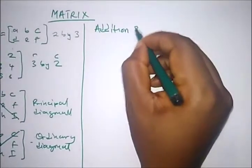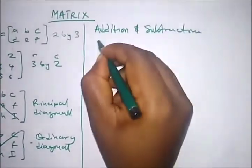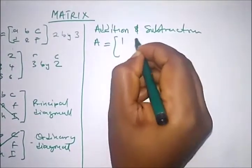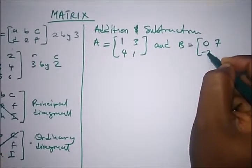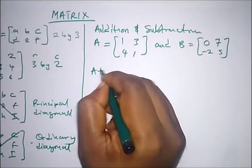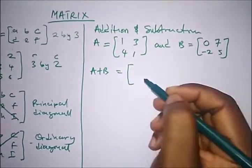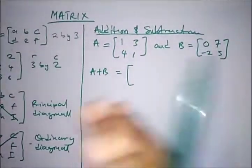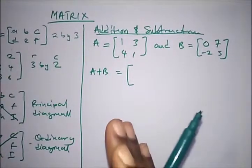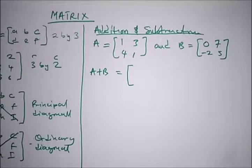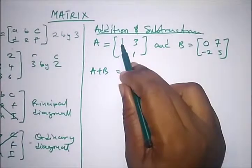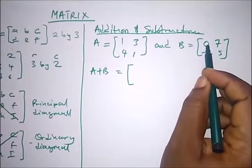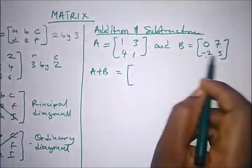In carrying out addition and subtraction of matrices, let's say we have A equal to [1 3 / 4 1] and B equal to [0 7 / -2 5]. In addition and subtraction, the matrices must be of the same order — for example, a 2×2 matrix added to another 2×2 matrix. We simply add each corresponding element.